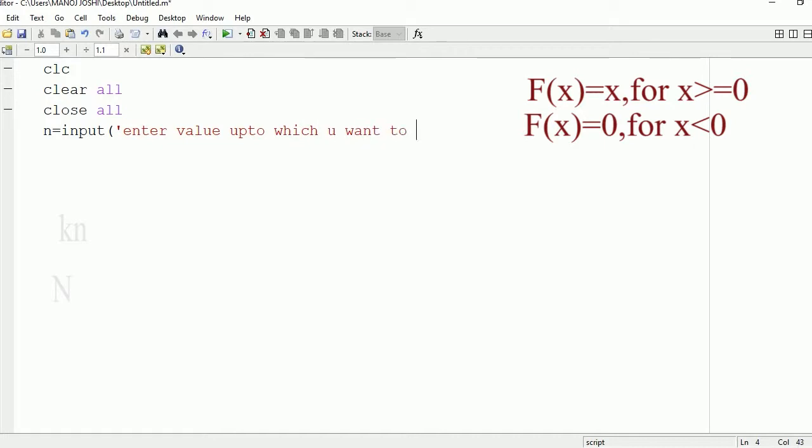Now after that we need to define the interval of t, which is toward the x-axis. So t is equal to 0 to n. Here 1 is the interval, so it means that it will be like 0, 1, 2, 3 up to n.